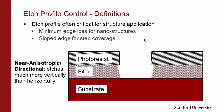Lastly, I want to talk about near-anisotropic or directional etching, which is probably more typical of what we'll actually see. We have a little bit of undercut and some slope. A lot of times we want this intentionally because of step coverage — when we have a film going over a sharp step, having some slope reduces the chance of breakage of the film at the corners.